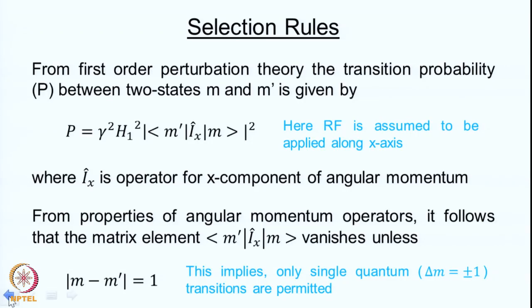We now go forward and ask: are there any further restrictions in the absorption of energy? In other words, are there any selection rules for absorption of energy? Indeed there are some selection rules, and this comes as a result of quantum mechanical treatment of the interaction between the spin system and the applied RF — called first-order perturbation theory — and P can actually be calculated using this.